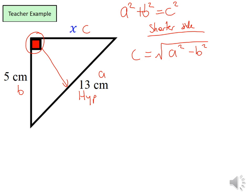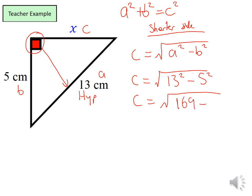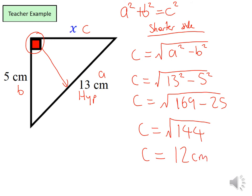Now we can substitute those values into the equation. C, the short side we're trying to find which is X, equals the square root of A squared minus B squared. A squared is 13 squared, take away B squared which is 5 squared. So C equals the square root of 169 take away 25, which equals the square root of 144, giving an answer of 12 centimeters. Remember the units — therefore my short side here is 12 centimeters.